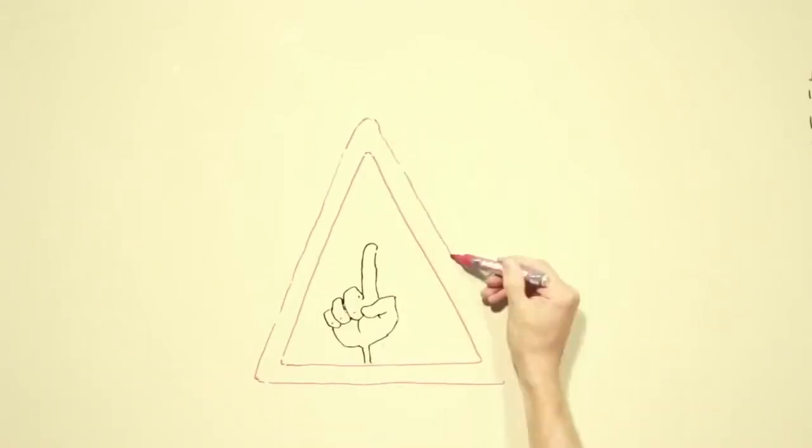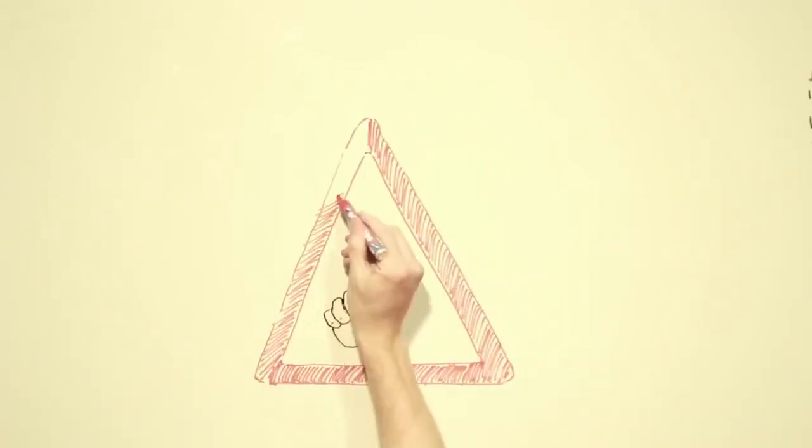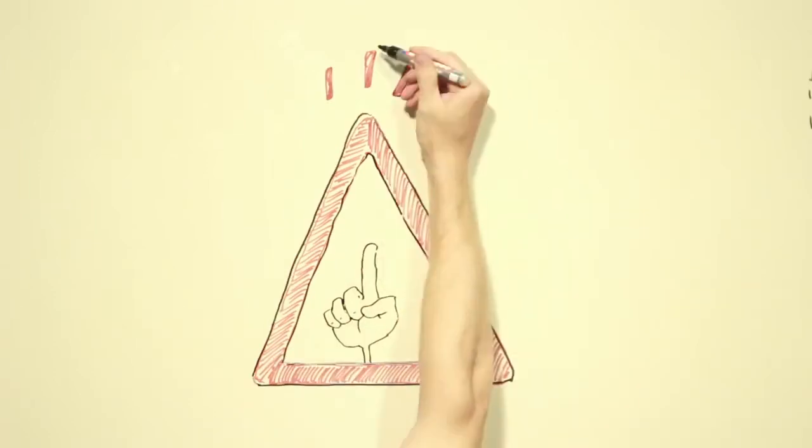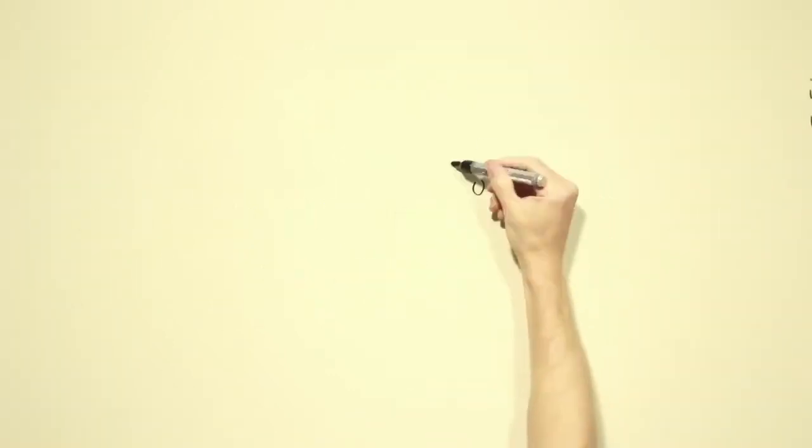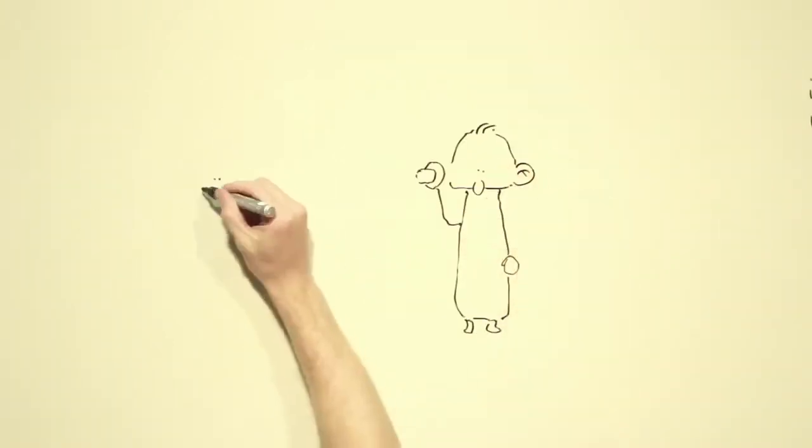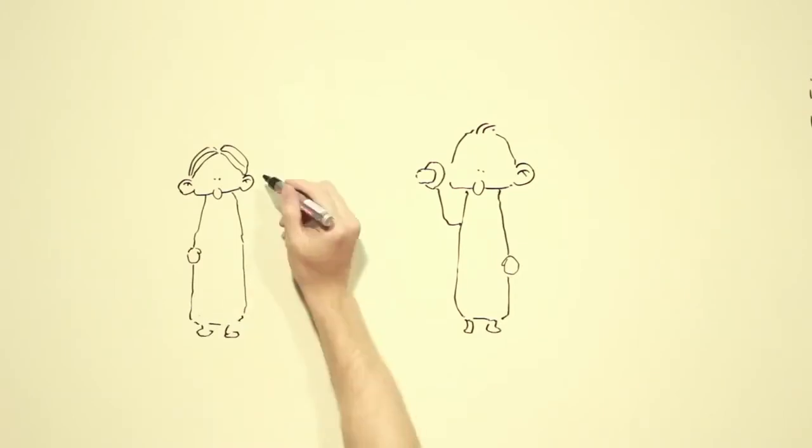This means that a map can never display the entire reality, but only what it should depict. Who actually makes maps and what do maps do to us? Those who make maps decide what is important and should be shown on the map.